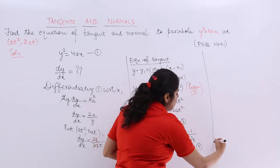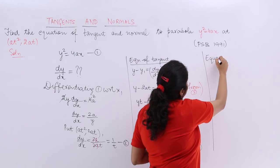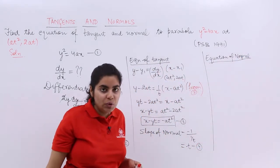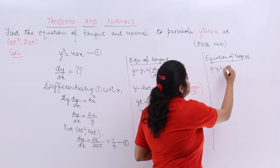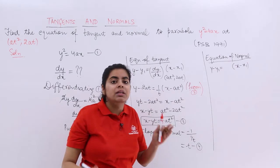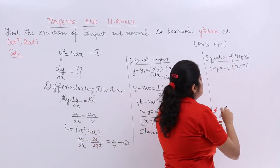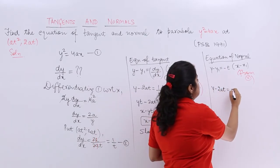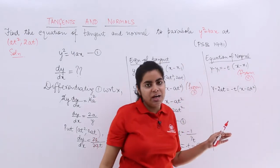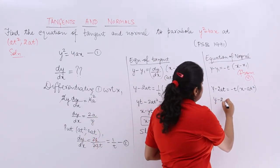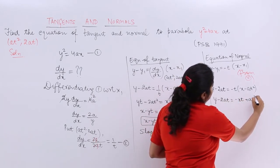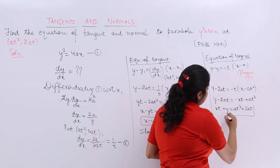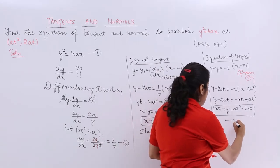The equation of the normal is found using y − y₁ = m(x − x₁), where m = −t from equation 4. Substituting: y − 2at = −t(x − at²). Expanding: y − 2at = −xt + at³. Rearranging: xt + y = at³ + 2at. That is the equation of the normal, equation number 5.